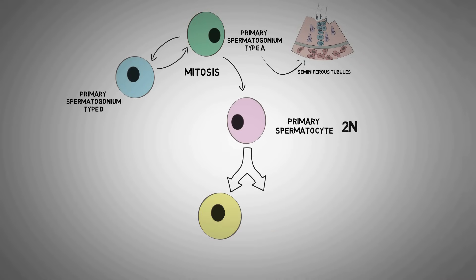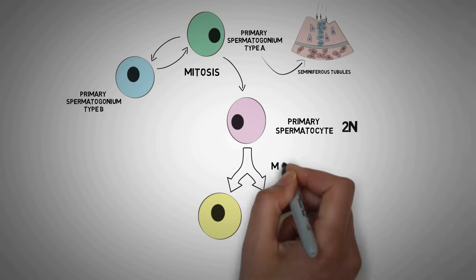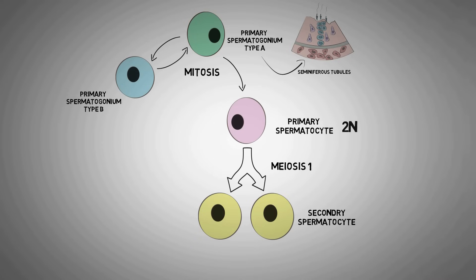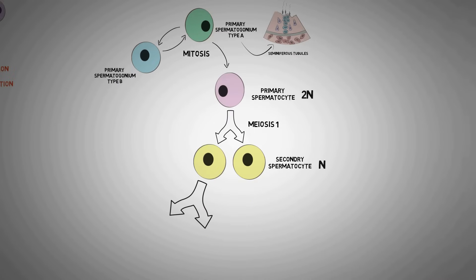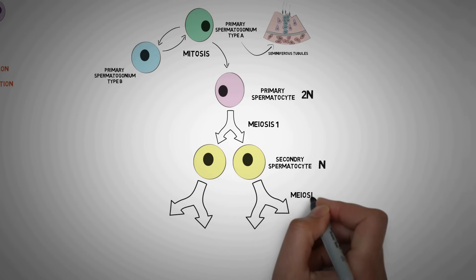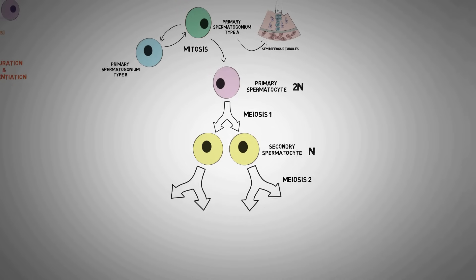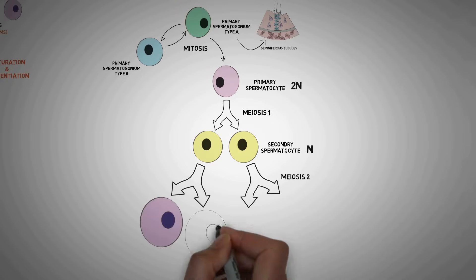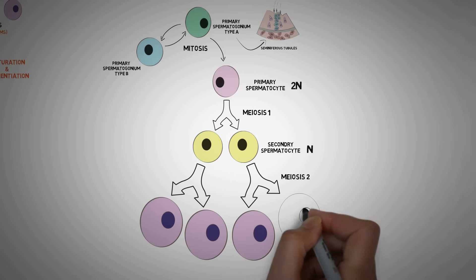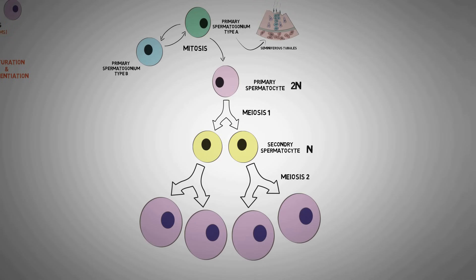In the second division, the primary spermatocytes go through the first phase of meiosis and divide their chromosomal material into half, giving rise to secondary spermatocytes, which are haploid cells. In the last stage, the secondary spermatocytes again go through meiosis II and maintain their chromosomal number, giving rise to four immature sperms known as spermatids.